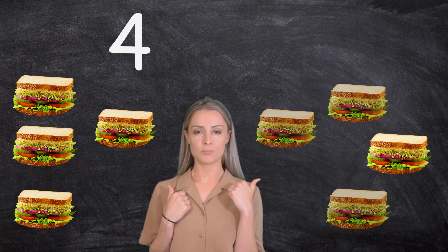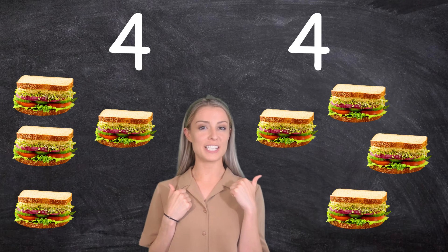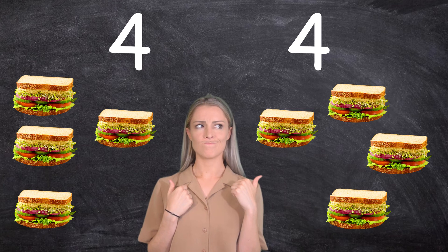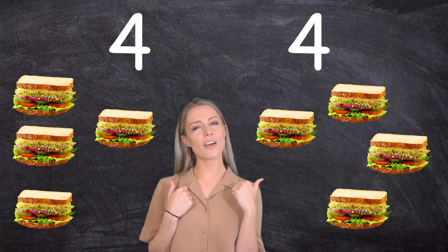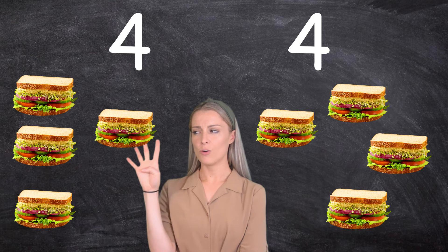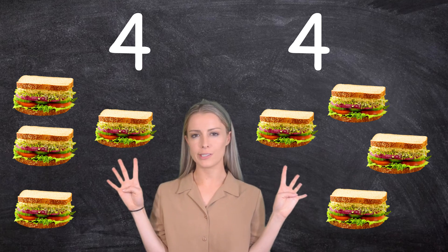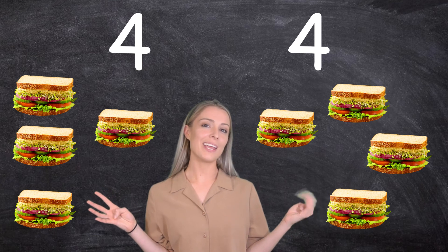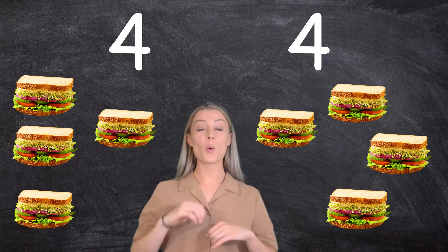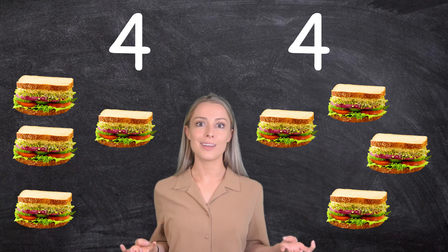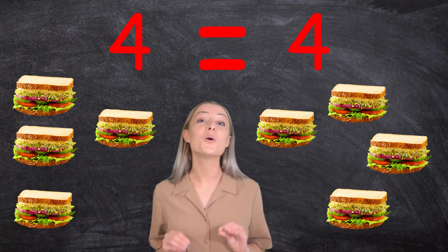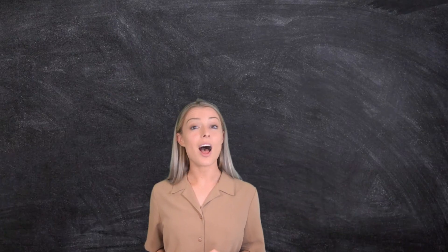You're getting really good at this! Let's try one more. I have four sandwiches on this side and four sandwiches on this side. Which side has the greater number? Can you guess which side the crocodile is going to eat? Four on this side and four on this side. Remember at the beginning I showed you the greater than, less than, and equal to sign. When it's equal or the same amount, we use the equal sign, because four is equal to four. Well done!